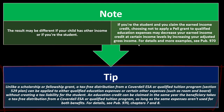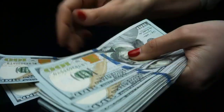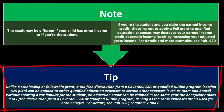Unlike a scholarship or fellowship grant, a tax-free distribution from a Coverdell ESA or qualified tuition program (Section 529 plan) can be applied to either Qualified Education Expenses or certain other expenses such as room and board without creating a tax liability for the student. That tool is specifically designed to pay for these items including room and board, so you don't have to include the amount in income. An education credit can be claimed in the same year as a tax-free distribution from a Coverdell ESA or qualified tuition program, as long as the same expenses aren't used for both benefits. See Publication 970 Chapters 7 and 8.